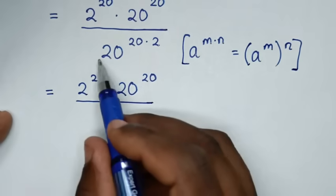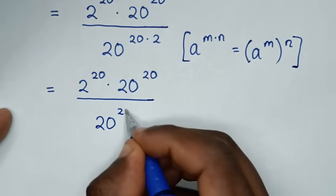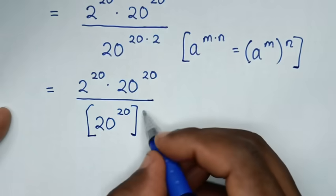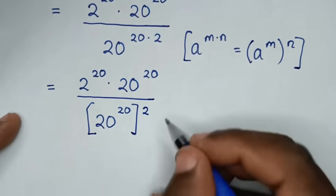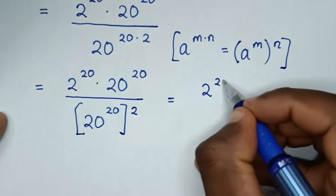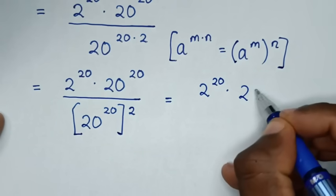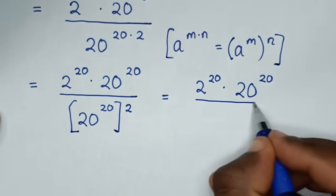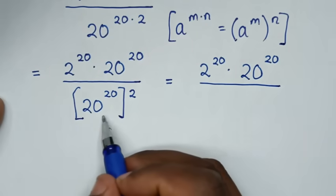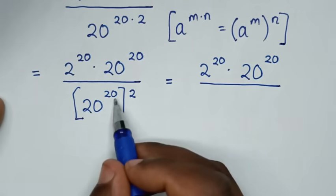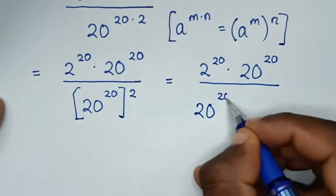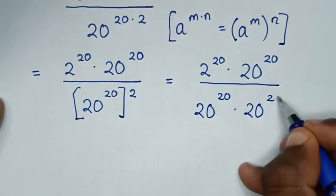So, it will be 20 power of 20 inside the bracket, power of 2 outside the bracket. Then, it will be equal to 2 power of 20 times 20 power of 20, then over 20 power of 20 times 20 power of 20, because it is double. So here, it will be 20 power of 20 times 20 power of 20.